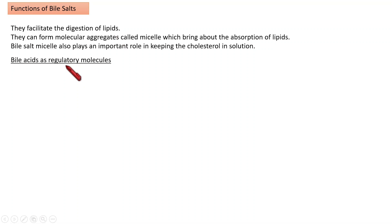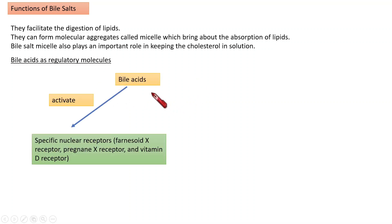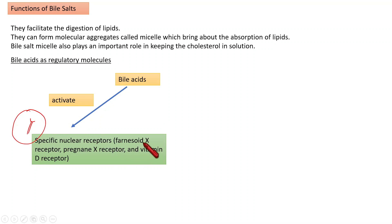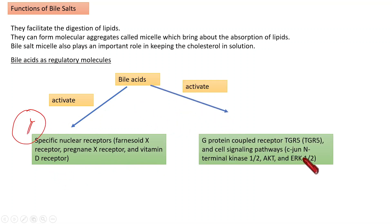In addition to all these points, bile also stands as certain regulatory molecules. Bile acid activates certain nuclear receptors — receptors found inside the nucleus. Examples of such receptors include the Farnesoid X Receptor (FXR), Pregnane X Receptor (PXR), and the Vitamin D Receptor.